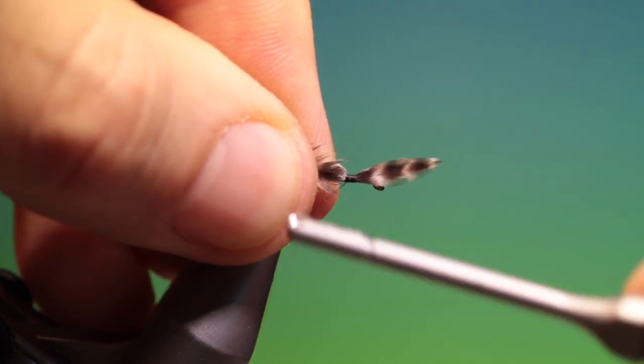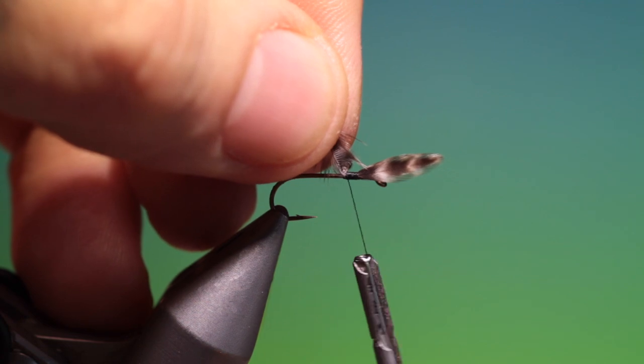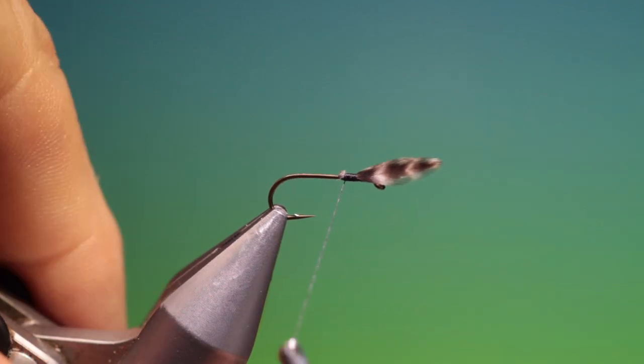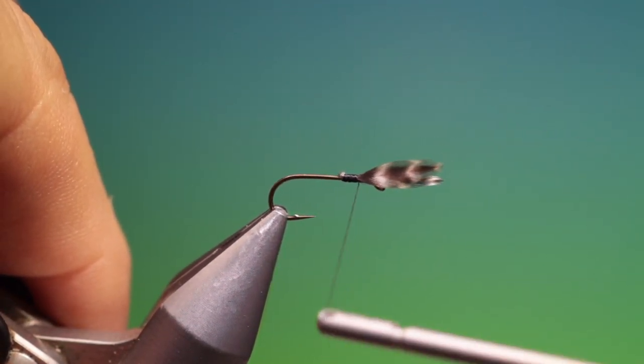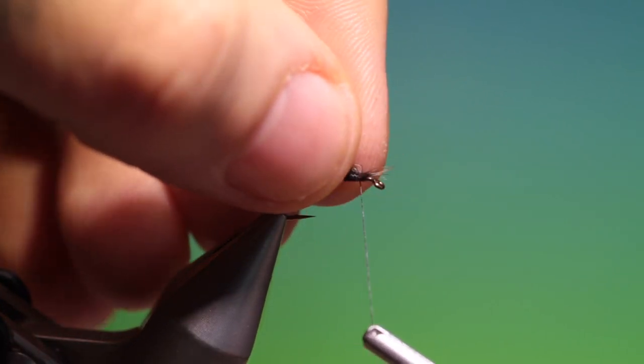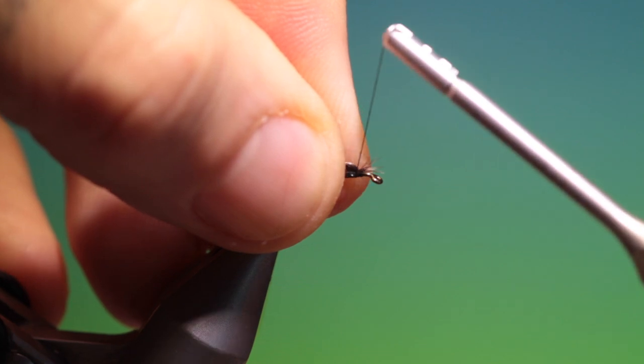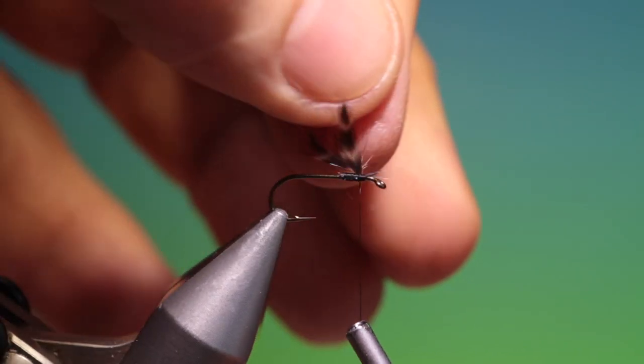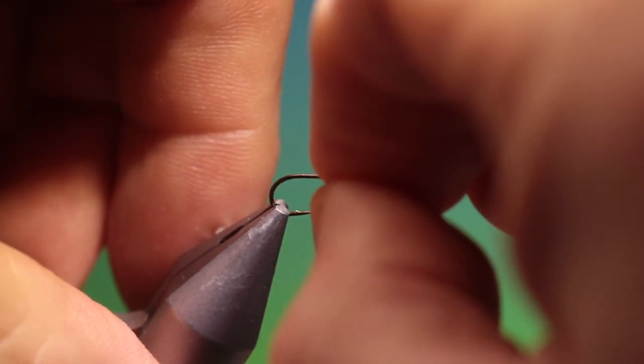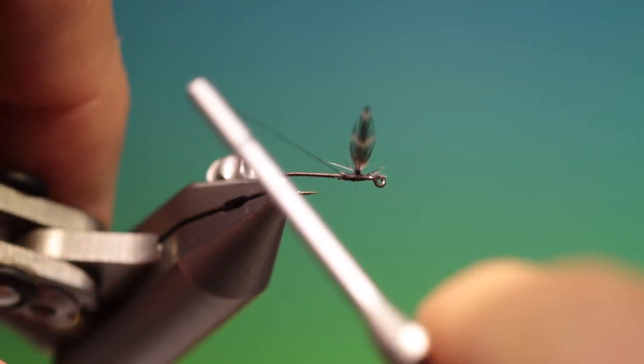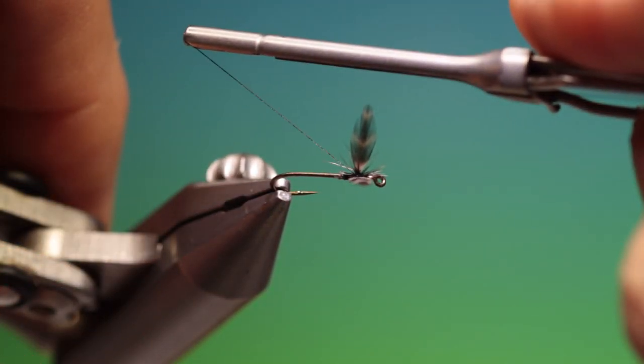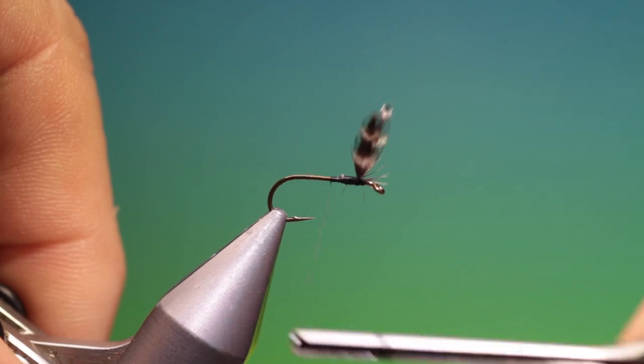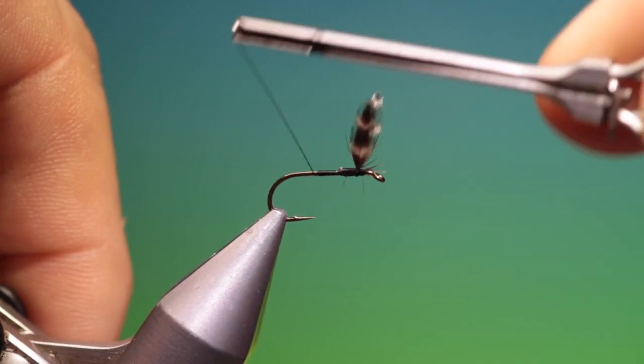Then we can go back just a wee ways and we can remove those and go forward again. Lift up the wings and into the wing base just to hold them up and in position. Then we do a figure of eight in between to keep them spaced and then we can go back to about there.